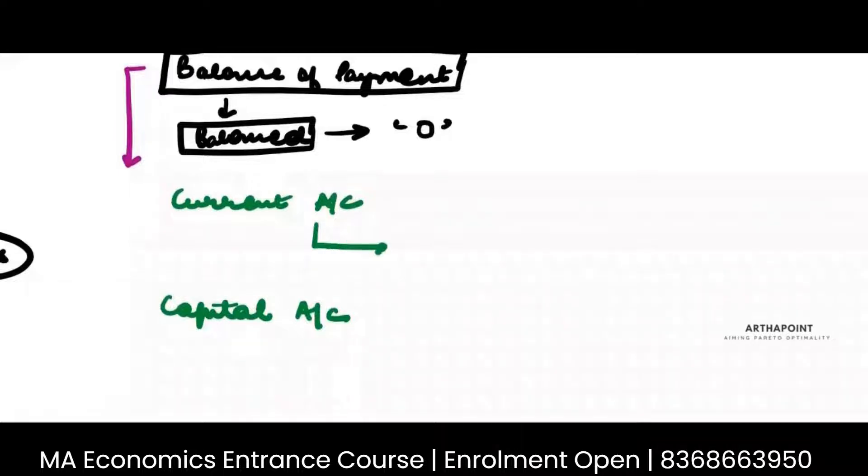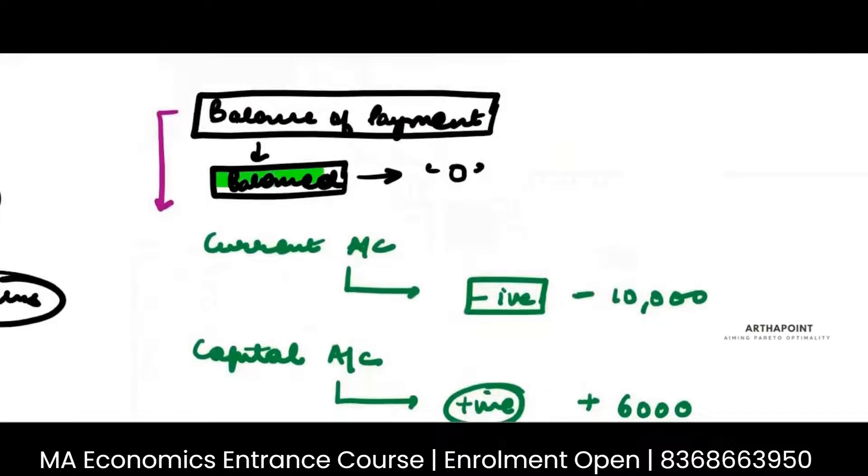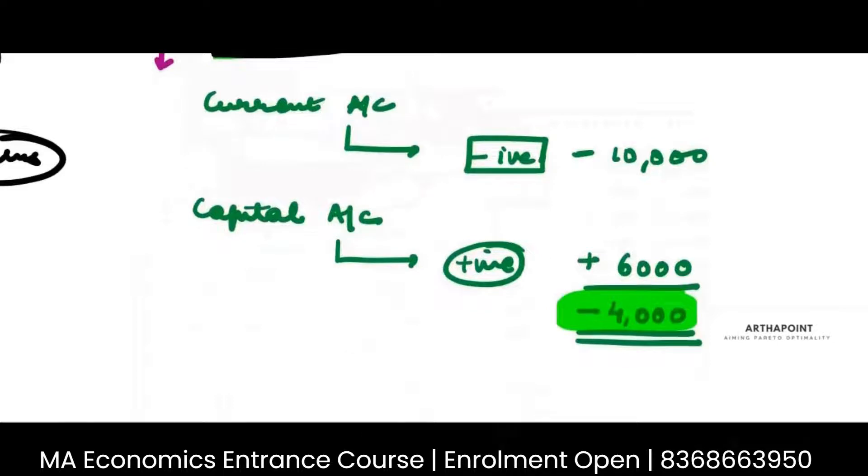Supposedly, the current account has a negative balance. And then in capital account, suppose there is a positive balance. But suppose the current account had negative 10,000, capital account had positive 6,000. So the balance that we have is negative 4,000. Now, how do we really take care of this? Because the balance of payment, by its very definition, has to be balanced.